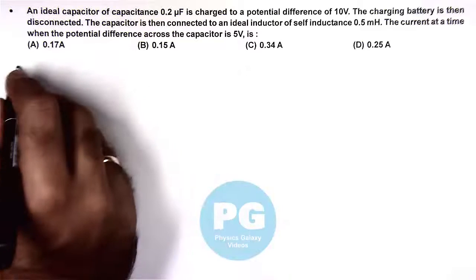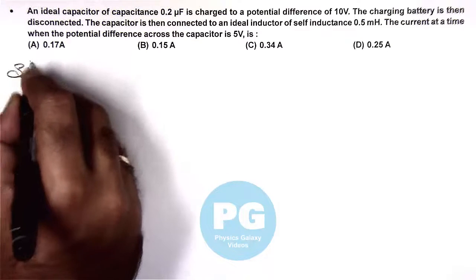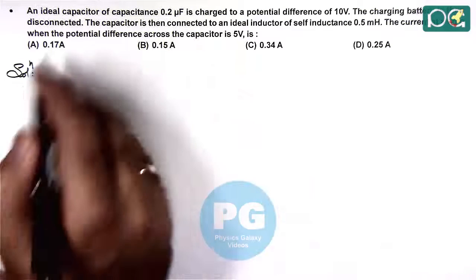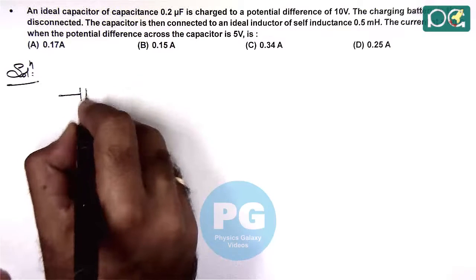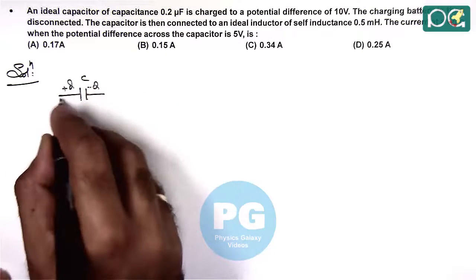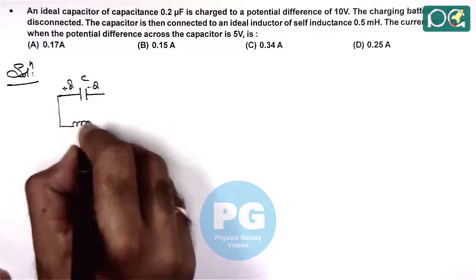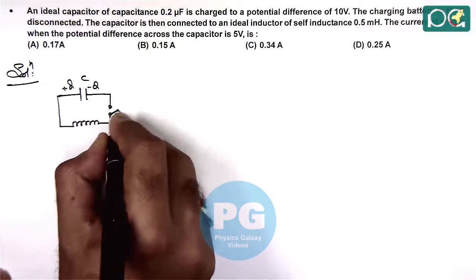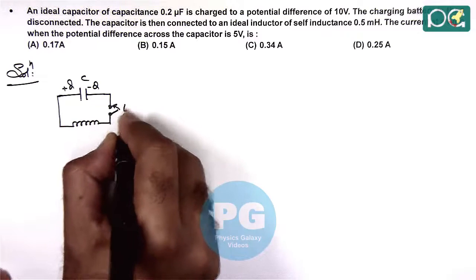This is a basic case of LC oscillation in which energy of the capacitor is getting transferred to the inductor. We draw the situation: the capacitor has a charge plus q, minus q, and is connected across an inductor. Here we close down the switch at t equals 0.